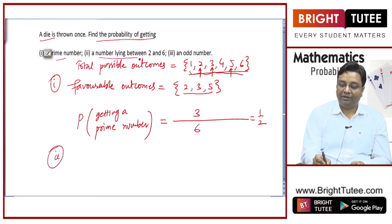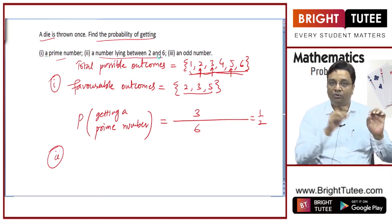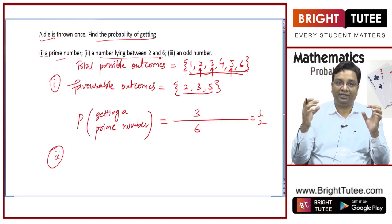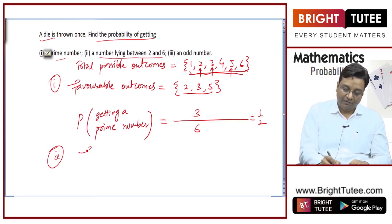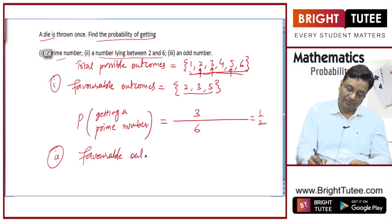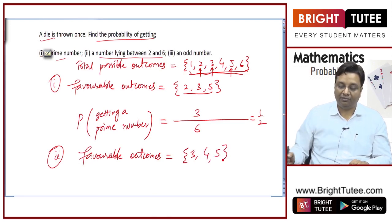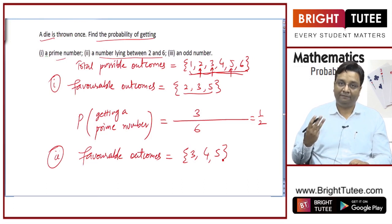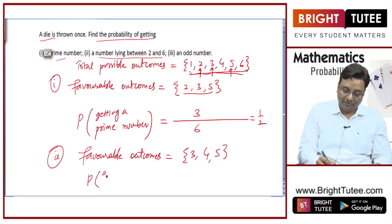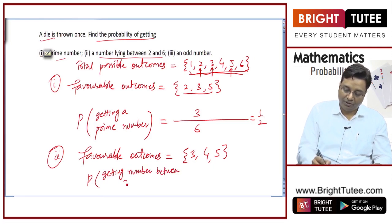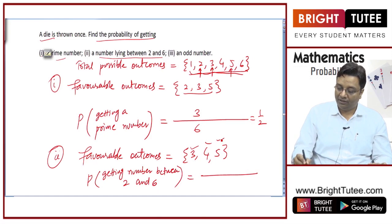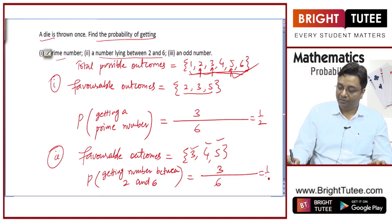What is the probability of getting a number lying between 2 and 6? We are not including 2 and 6 themselves, so the favorable outcomes are 3, 4, and 5 — that is 3 favorable outcomes out of 6 total. So the probability is 3/6, which equals 1/2.